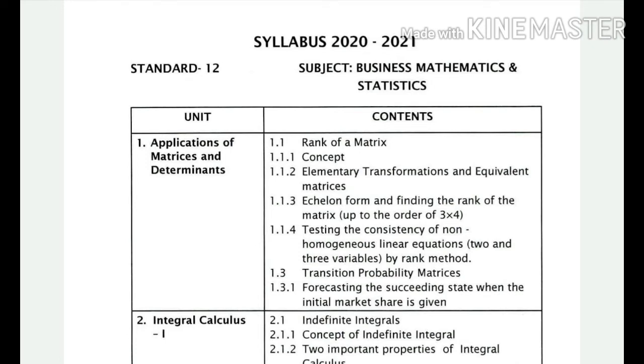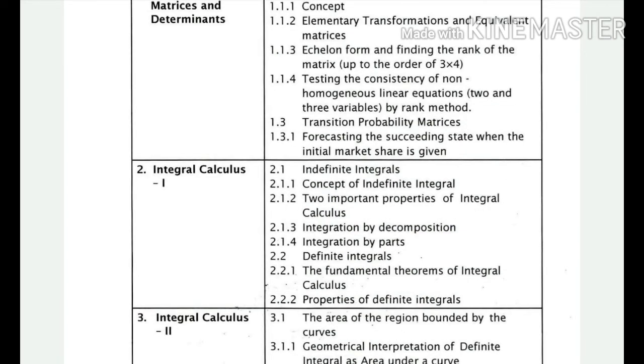Exercise 1.2 has been omitted. In the second chapter, Integral Calculus 1, sections 2.1 to 2.5 are included. Sections 6 and 7 are omitted, while 8 and 9 are included. Exercises 10 and 11 have been omitted.